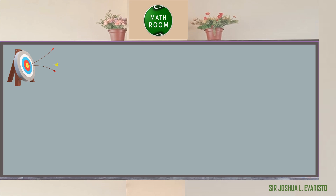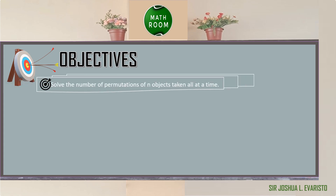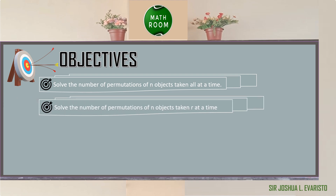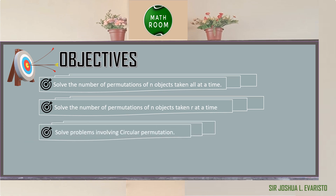Before we proceed on our discussion, let me present to you our objectives. At the end of this lesson, you should be able to: solve the number of permutations of n objects taken all at a time; solve the number of permutations of n objects taken r at a time; and solve problems involving circular permutation.